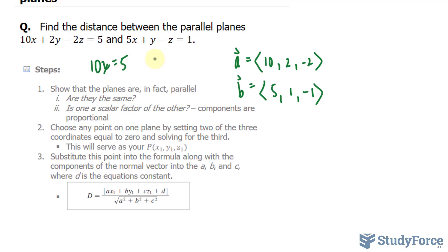Dividing both sides by 10, I end up with an x value of half. So we have a point along this plane at 1 over 2, 0, and 0.